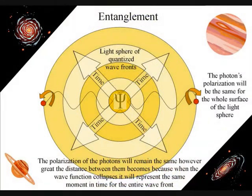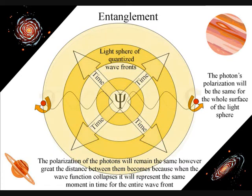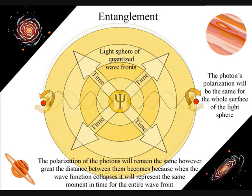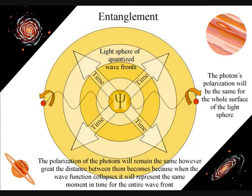We have entanglement because the polarization will be set at the creation of each expanding wavefront. The wavefront will expand in the form of a light sphere, and the polarization will remain the same for the entire surface of the light sphere, no matter how large it becomes.